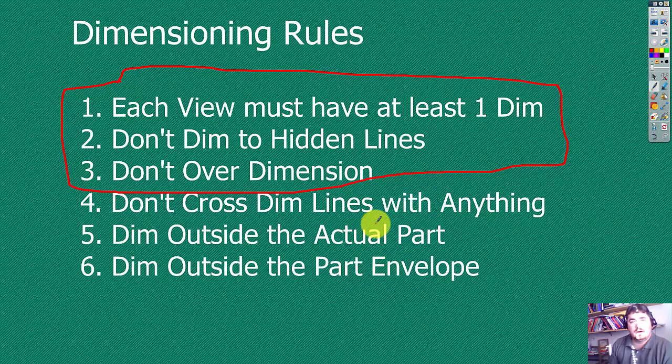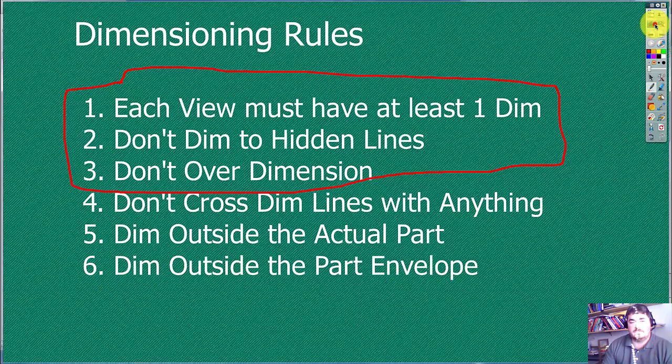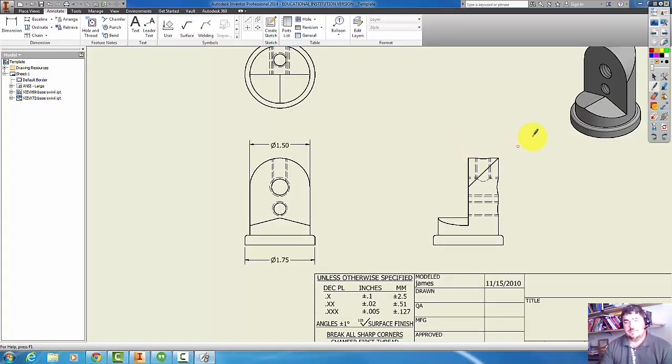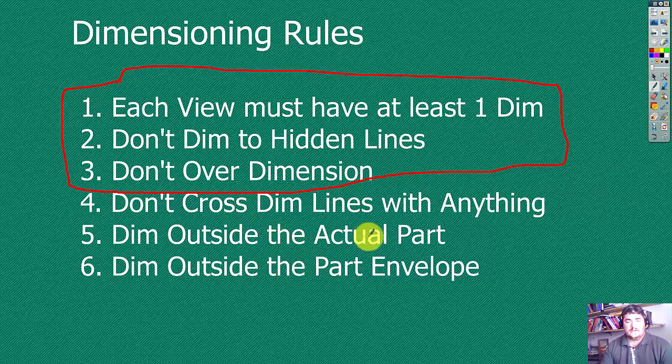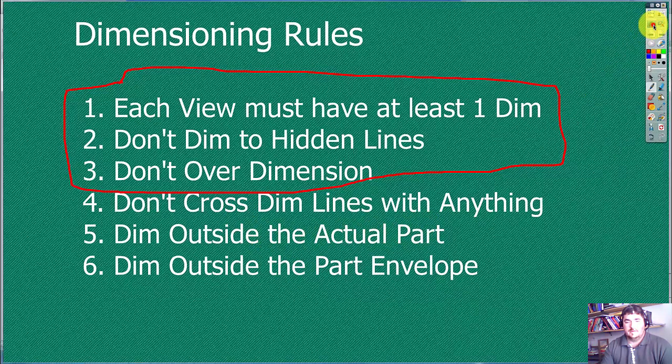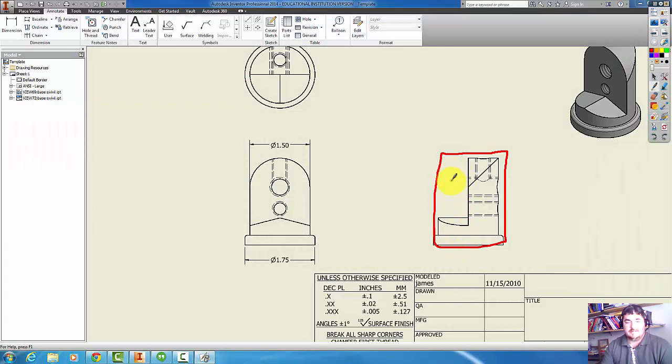The next three you can break, but break them in ascending order. First, try to dimension outside the part envelope. The part envelope on this part here would be that rectangle around the part, so we're trying to keep stuff out of this area in here. If we can't do that, then we want to keep it outside the actual part. So if we can't keep it out here, then go ahead and put it in the envelope but off the part.